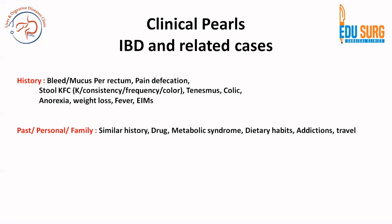In past personal and family history, important points include similar history in the past. Drug history is important as drug-induced colitis is a differential diagnosis of IBD. Metabolic syndrome is also important because ischemic colitis is more common in patients with metabolic syndrome and pro-thrombotic states. Dietary habits are important, as are addictions, recreational drug use, and travel history — to understand if the patient may be immunocompromised or have infective colitis.